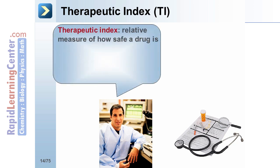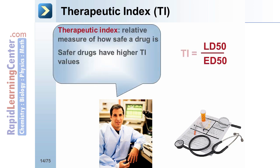The therapeutic index, or TI, gives a relative measure of how safe a drug is. TI equals the LD50 — the dose toxic to 50% of the population — divided by the ED50 — the dose effective in 50% of the population. This can be memorized using the abbreviation TILE: TI equals LD50 divided by ED50. Safer drugs have higher TI values.